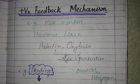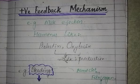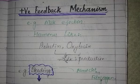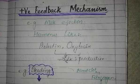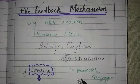Positive feedback is less common compared to the negative feedback mechanism. In positive feedback, a hormone is secreted in a way that is beneficial for the body, producing more secretion. For example, milk ejection involves hormones like prolactin and oxytocin. Prolactin is involved in milk production.